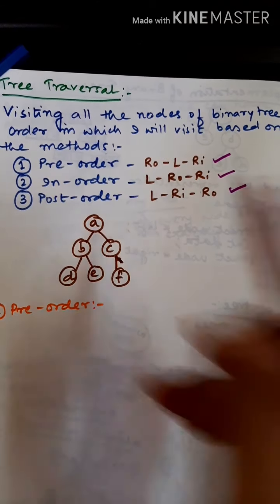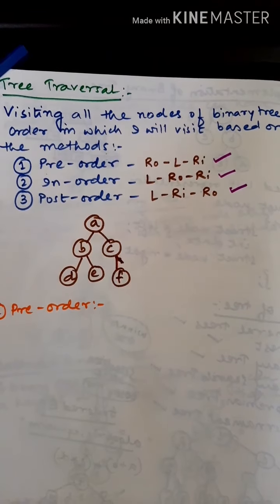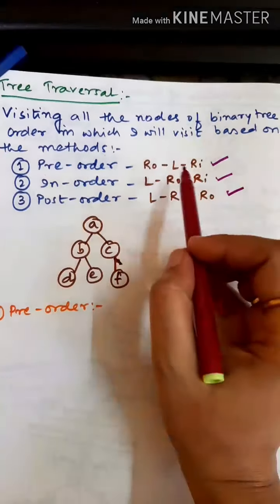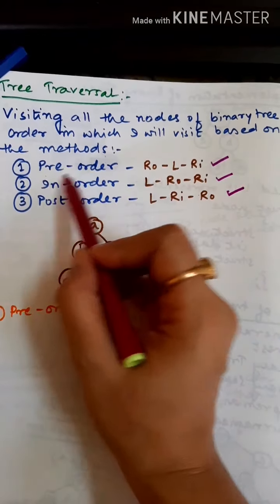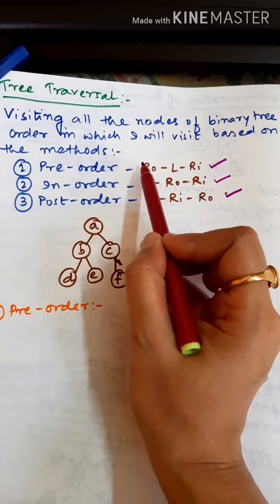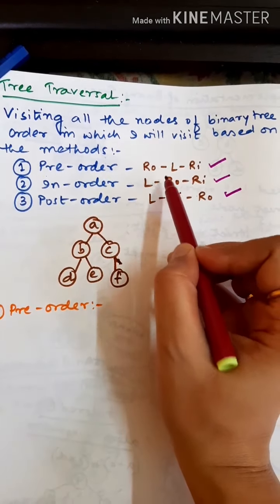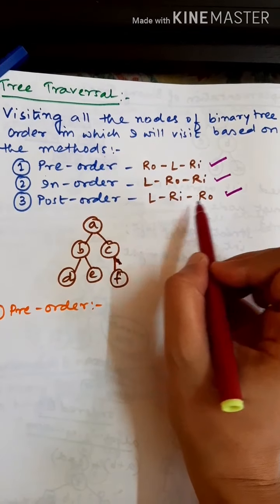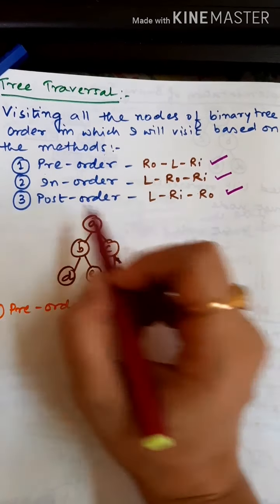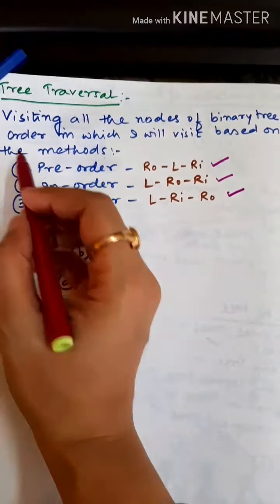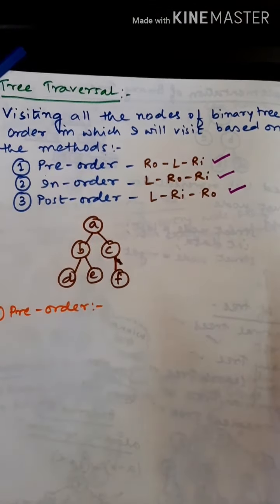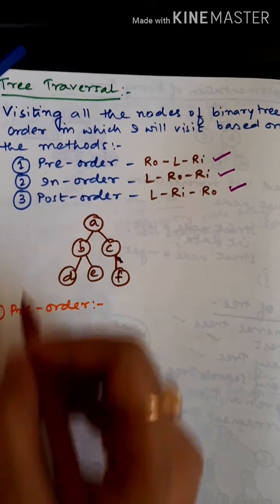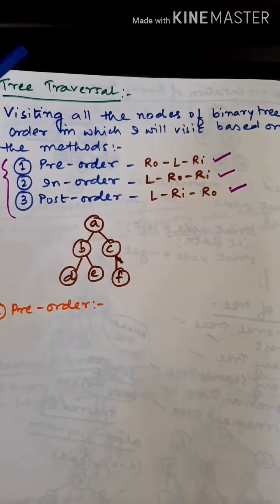If you notice carefully, pre-order, in-order, and post-order are named according to the location of the root in the traversal path. If the root is at the first position, it is pre. If the root is between the left and right subtrees, it is in. If the root is after the left and right subtrees, it is post-order.